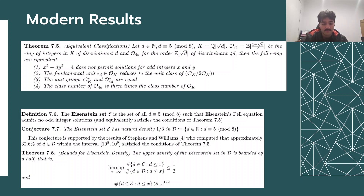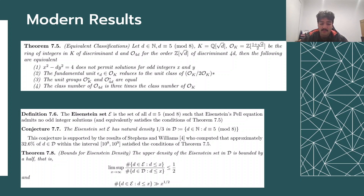To answer the natural question of how many values of d satisfy the conditions of the theorem, we have the following result. Let us define the Eisenstein set as the set of all d congruent to 5 mod 8 that admit odd solutions. Then it is conjectured that the Eisenstein set has natural density one-third in the set of all d congruent to 5 mod 8. An upper bound of one-half has been proved for the density of the set, but no such lower bound has been proved. However, the number of d in the Eisenstein set such that d is less than x has been proved to be much greater than x to the power of one-half.